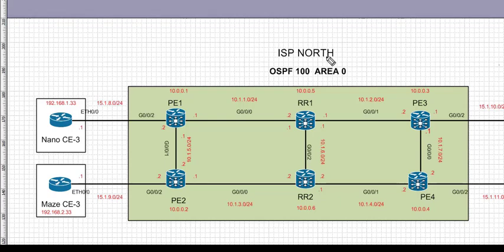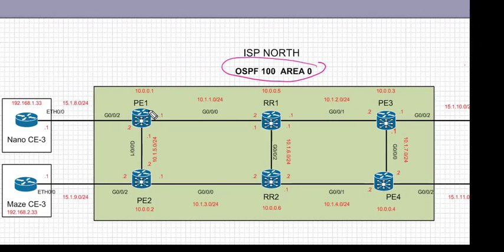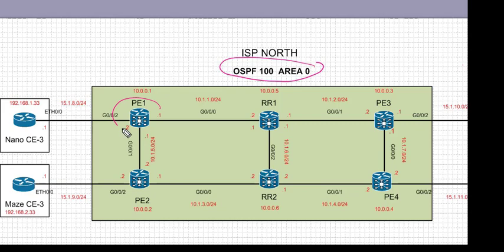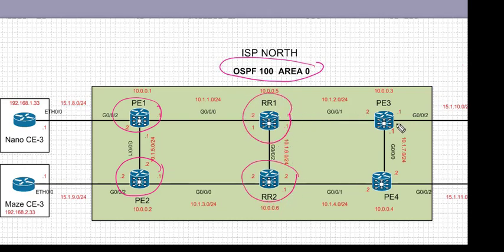Hello and welcome to the IOS XR series. This is the third lesson and today we're going to take a look at protocol OSPF. Our topology here is ISP North and we're going to configure OSPF process ID 100 in area 0.